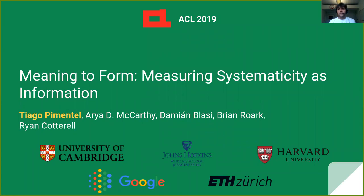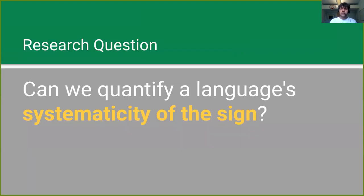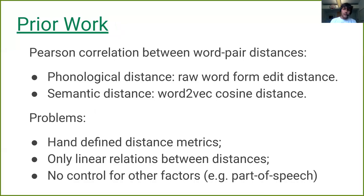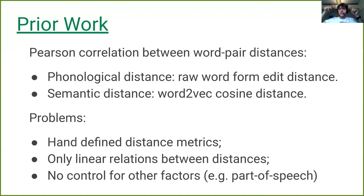I'll start with the first paper, presented at ACL 2019, called "Meaning to Form: Measuring Systematicity as Information." The research question was: how could we quantify a language's systematicity of design? There is a number of prior work trying to do this, and most of them use the Pearson correlation between the phonological distance and the semantic distance of word pairs in a language — you get the phonological and semantic distance between every pair and then compute the correlation.